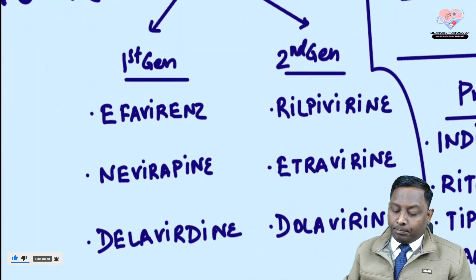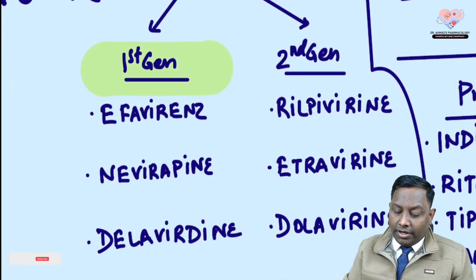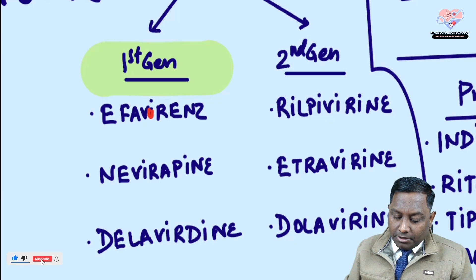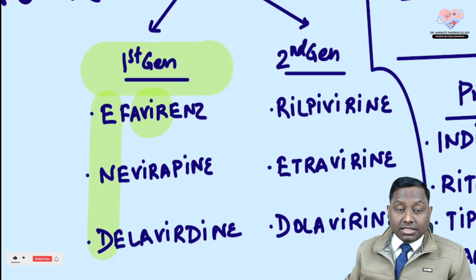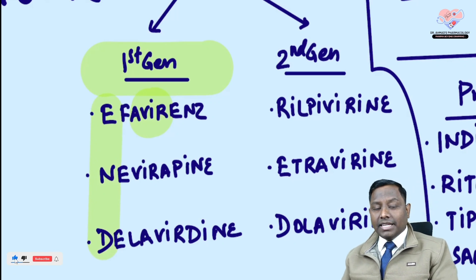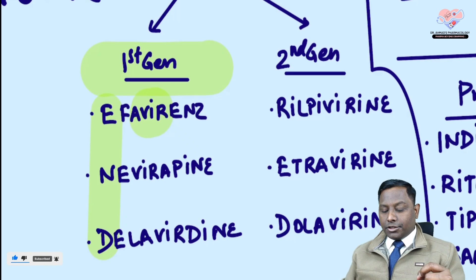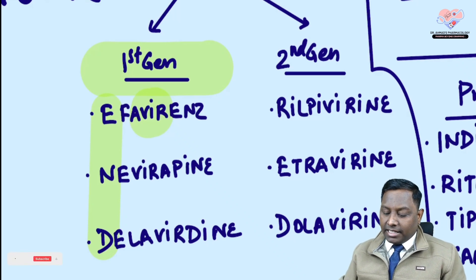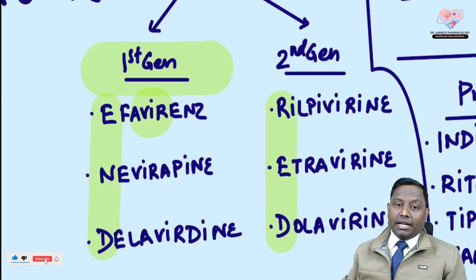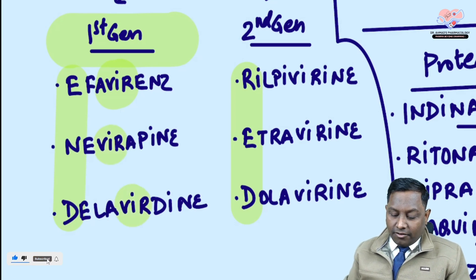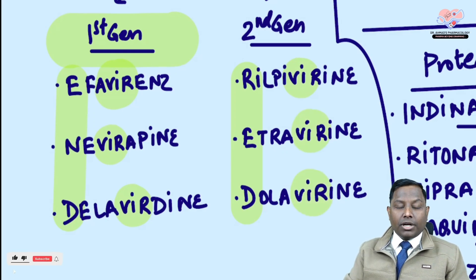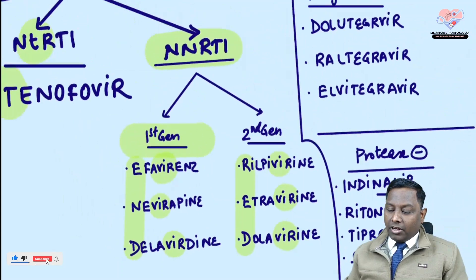To identify NNRTIs, look for 'virus' hidden in the drug name. First-generation NNRTIs: efavirenz, nevirapine, delavirdine. Second-generation NNRTIs: rilpivirine, etravirine, doravirine — more potent with fewer side effects. For exams like NEET-PG, INICT, and FMG, you need to immediately identify these drugs from their names.